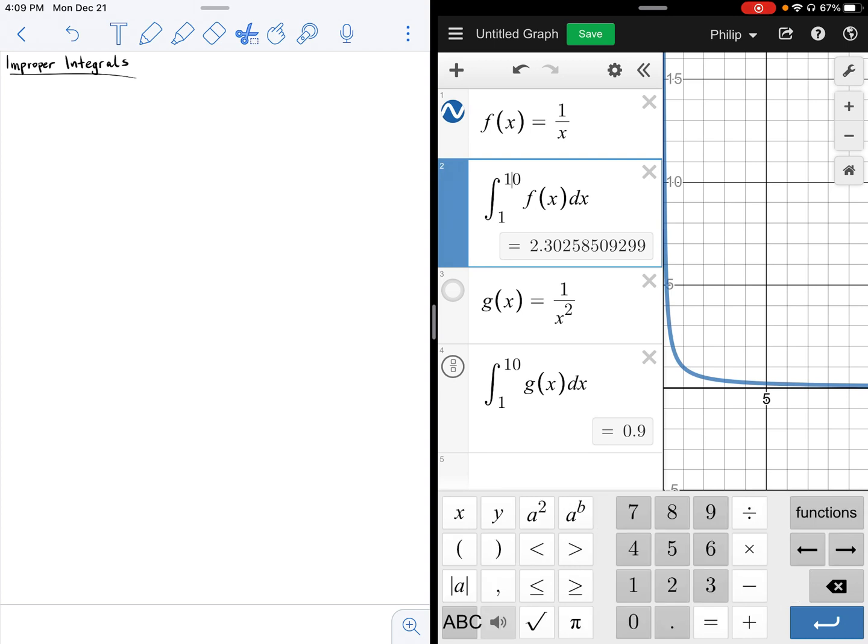Now, what about if I increase that upper bound? If I increase that to 100? Well, this then gives me 4.605, another finite value. Let's bump that up to 1 to 1,000. Now, we've also seen that our definite integral value is also increasing. And let's go even larger, 10,000, 9.210, or 100,000, 11.513.